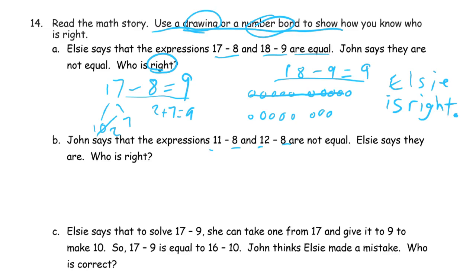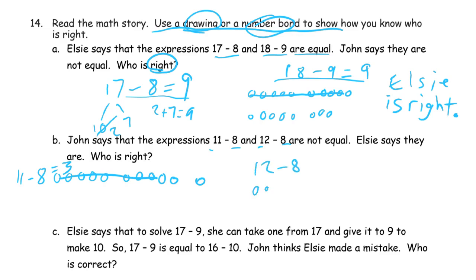So I'm going to draw pictures. 11 and 12 aren't huge numbers, so I can draw those pretty easily. I count out 10 and label this one 11 minus 8. So I know which one this is for. I cross out 8 — there should be 2 left from that 10, and 1 more — so this one equals 3. And now I'm going to do 12 minus 8. I count out 12. Cross out 8 — 2 left from that 10, and then 2 more — it equals 4.